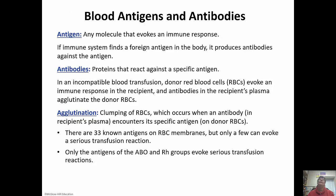An antigen is any molecule that evokes an immune response — those are the surface markers on our cells. If the immune system finds a foreign antigen in the body, it produces antibodies against it. Antibodies are proteins that react against a specific antigen. So if you have an incompatible blood transfusion, the donor red blood cells elicit an immune response and the antibodies attack them and agglutinate — meaning clump together. Agglutination occurs when an antibody encounters its antigen. There are 33 known antigens on red blood cell membranes, but only a few evoke a serious reaction with transfusions.